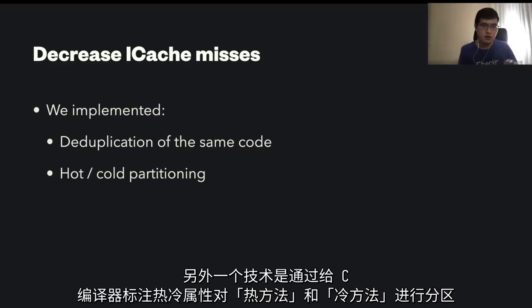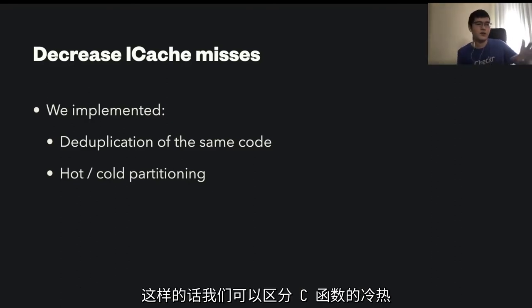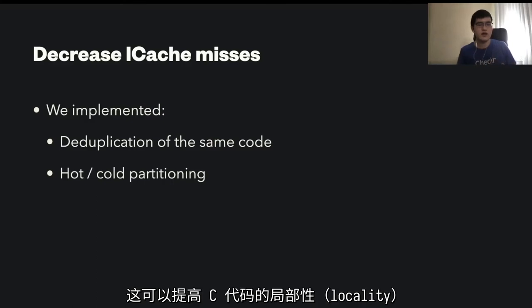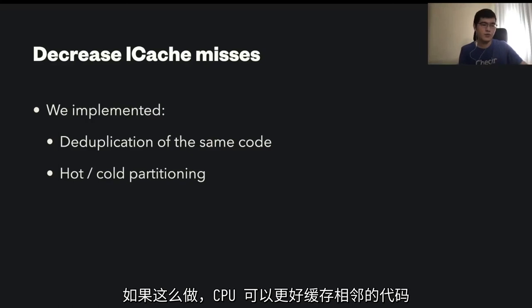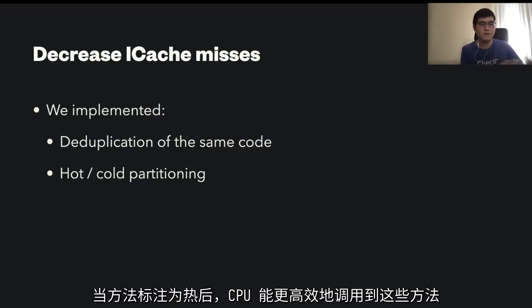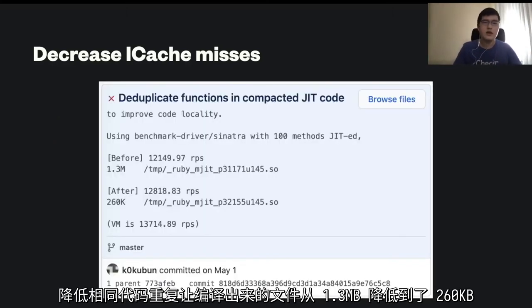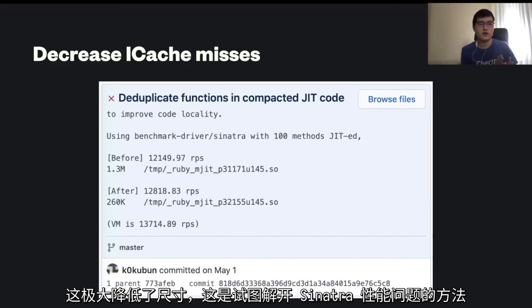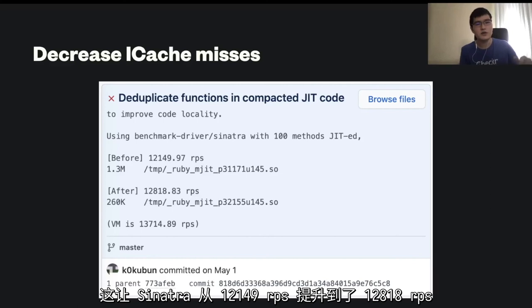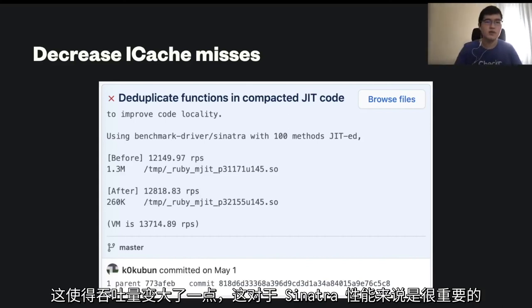The other technique is to partition hot and cold methods by annotating C functions with a 'cold' attribute in the C compiler. By doing so, we can separate the hot path and cold path of C functions, improving locality. CPU is efficient at caching adjacent code, so if we position hot paths in a very close place, CPU can behave more efficiently. The deduplication was improving code size from 1.3 megabytes to 260 kilobytes — a huge reduction — and that was the way to improve Sinatra a lot: from 12,149 RPS to 13,818 RPS. That contributes to Rails performance as well.